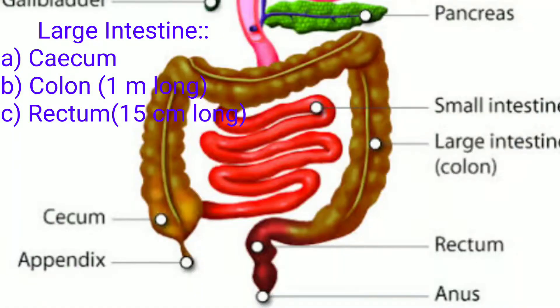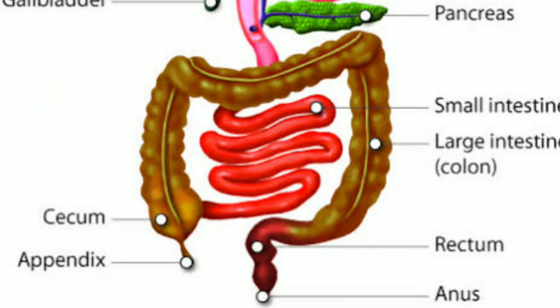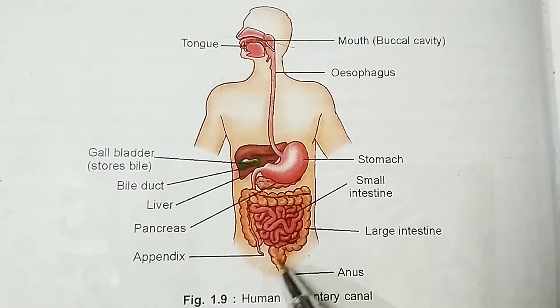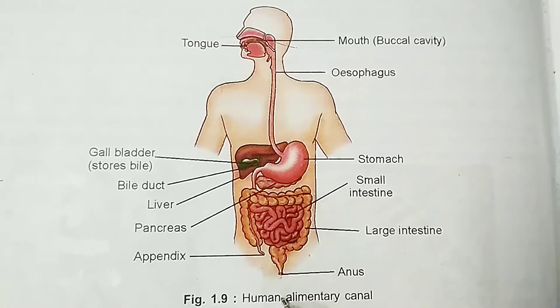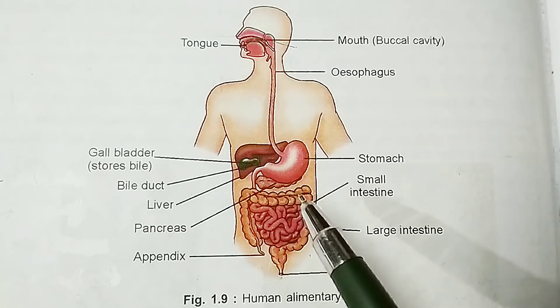The last part of the alimentary canal is the large intestine. It absorbs water and electrolytes and forms and stores feces. It has three parts: the cecum, which is the junction between small intestine and large intestine; the colon, around 1 meter long, where absorption of water mainly takes place; and the rectum, the last part of the large intestine, which opens outside through the anus.